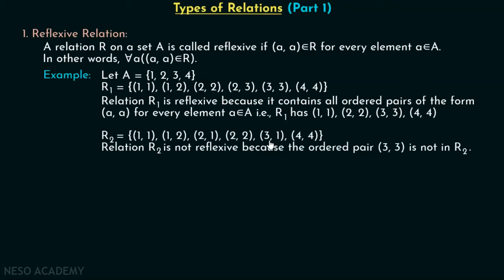Let's see one more relation. Let's say R2 is a relation which consists of these ordered pairs: (1,1), (1,2), (2,1), (2,2), (3,1), (4,4). This relation is not reflexive because the ordered pair (3,3) is not in R2. We have (1,1), we have (2,2), we have (4,4), but there is no (3,3) inside R2. Hence, R2 is not reflexive.